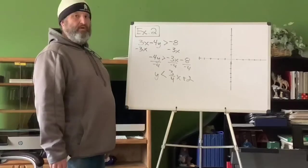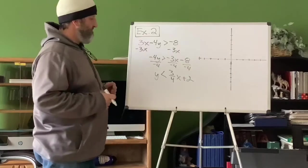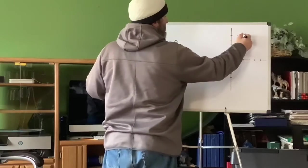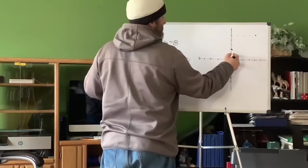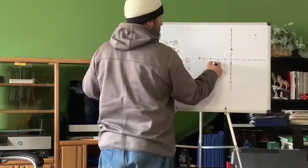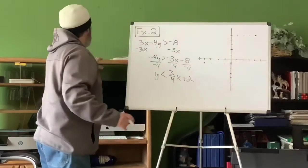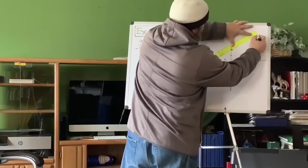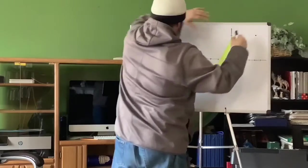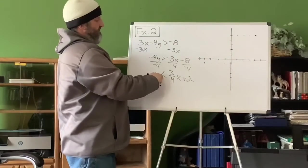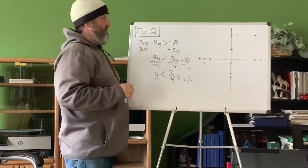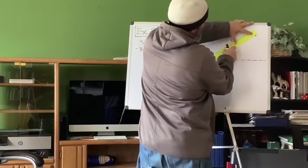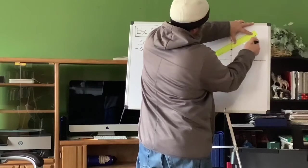Now we'll graph it. Start at y-intercept 2. Slope is three-fourths: up 3, over 4 — up 3, over 1, 2, 3, 4. Do it again: up 3, over 4. Hopefully that lines up well — that's why you need graph paper; make it better than mine. Now here's a really big deal I almost forgot: this is a strictly less than sign, so instead of a solid line, we use a dotted line.